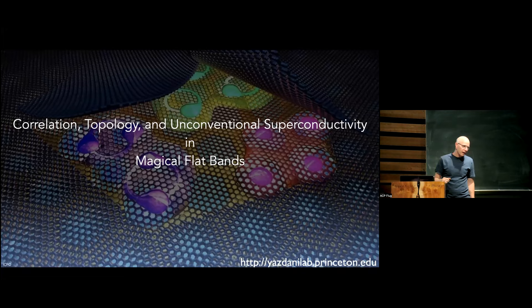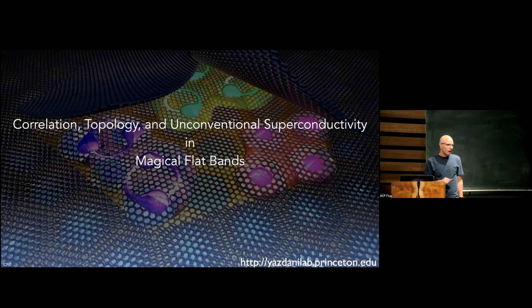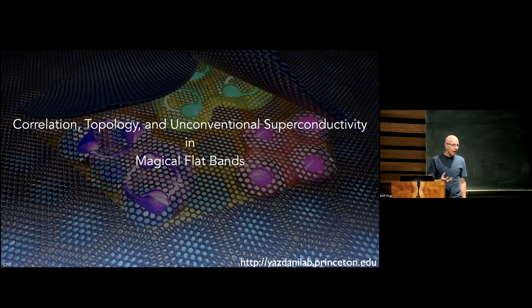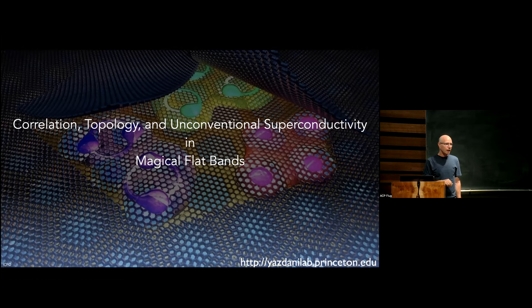Ali did his graduate work at Stanford with Arantab Tonic, then moved to the University of Illinois, spent almost a decade there, and then joined Princeton where he has been ever since. His main tool is scanning tunneling microscopy, and he's a real pioneer in this technique, both in terms of developing its capability to do amazing experiments — looking at specific spots in the sample as you vary both temperature and large magnetic fields. He's been first in many discoveries, looking at correlated matter, superconductivity, high-temperature superconductivity, and heavy fermion systems.